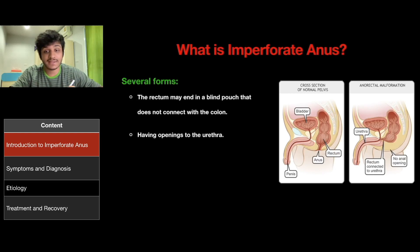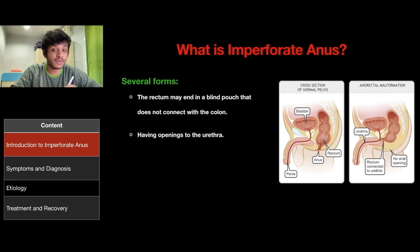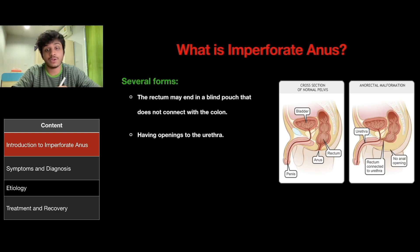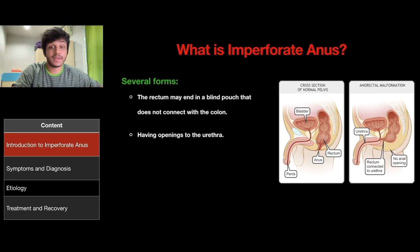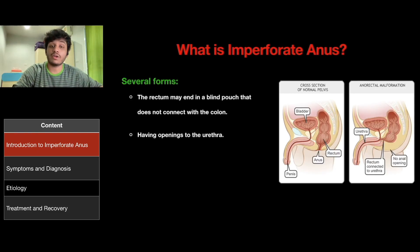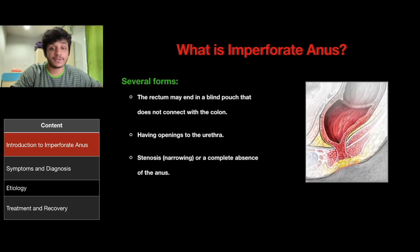As you can see in this diagram, on the left is how it would look if the baby was born without the disease, but on the right you can see the rectum is connected to the urethra. There may also be stenosis, or narrowing, or a complete absence of the anus.